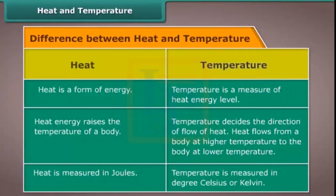The table shows the difference between heat and temperature. Heat is a form of energy. Temperature is a measure of heat energy level. Heat energy raises the temperature of a body, while the temperature decides the direction of flow of heat. Heat flows from a body at higher temperature to the body at lower temperature. Heat is measured in joules. Temperature is measured in degrees Celsius or Kelvin.